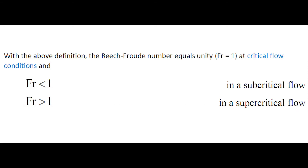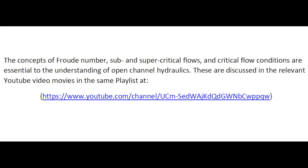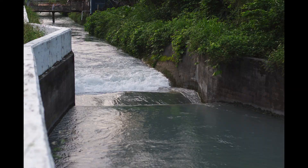With this definition, the Reich-Froude number equals 1 at critical flow conditions. In a sub-critical flow, the Froude number is less than unity. In a supercritical flow, the Froude number is greater than unity. The concepts of Froude number, sub- and supercritical flow, and critical flow conditions are essential to the understanding of open-channel hydraulics, and are discussed in the relevant YouTube video movies in the same playlist.